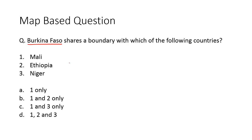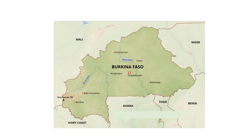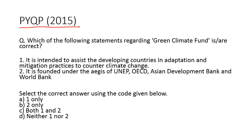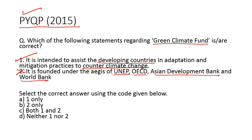Now let's take up a map-based question. Burkina Faso shares a boundary with which of the following countries? Burkina Faso shares a boundary with Mali and Niger, so option C is the correct answer. The neighboring countries of Burkina Faso include Mali, Niger, Benin, Togo, Ghana and Ivory Coast. Now let's take up a question from the 2015 prelims paper. Which of the following statements regarding the Green Climate Fund is or are correct? It is intended to assist the developing countries in adaptation and mitigation practices to counter climate change. It is founded under the aegis of the UN Environment Programme, OECD, Asian Development Bank and the World Bank. The first statement is correct but the second statement is wrong, because the Green Climate Fund has been established under the Climate Change Convention. So option A is the correct answer. This concludes our discussion for the day. Thanks for watching.